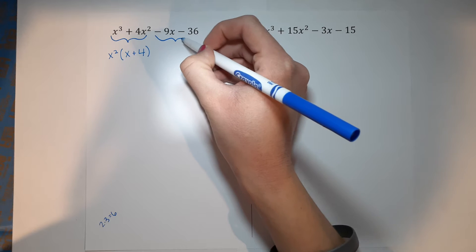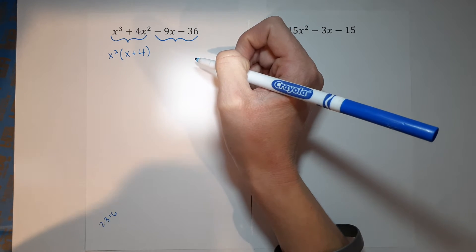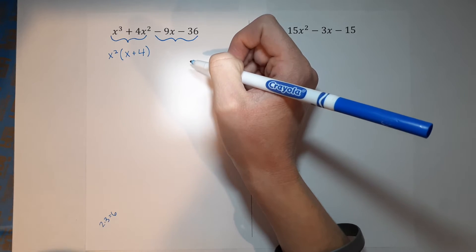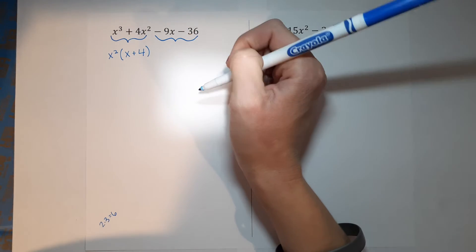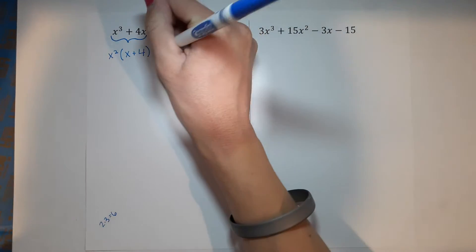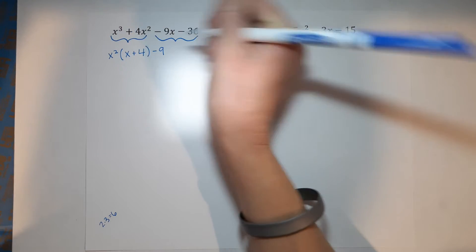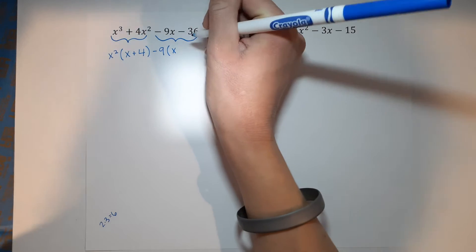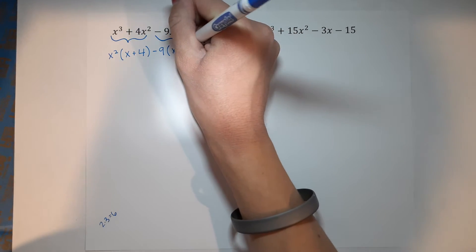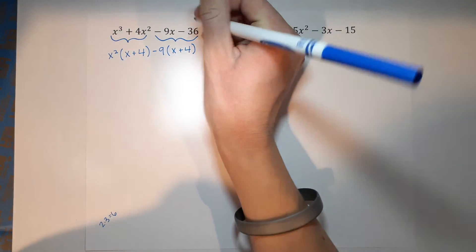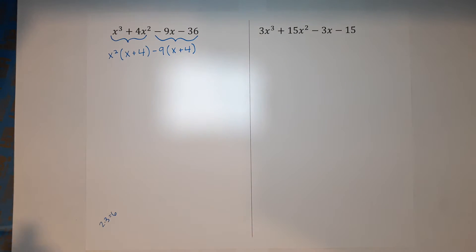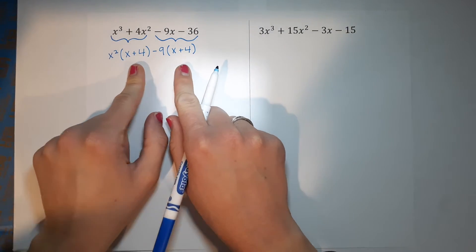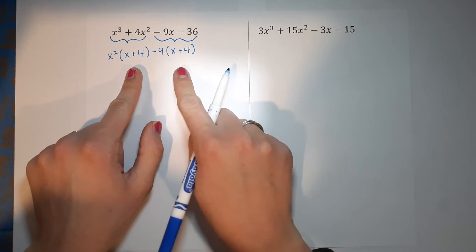Now we're going to do the same thing with the other side. What can I pull out from both of those last two terms? I know that negative 9 goes into both of them, so I'm going to pull out a negative 9. If I pull out a negative 9, I'm going to be left inside the parentheses with x plus 4.